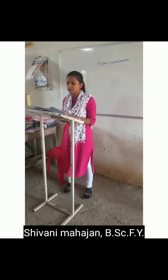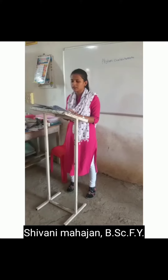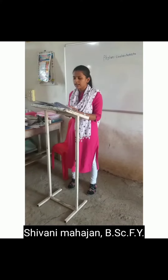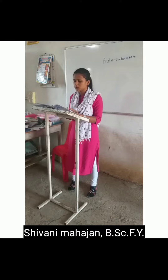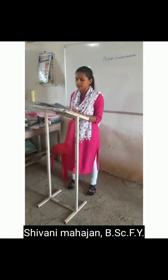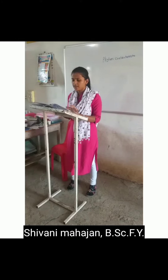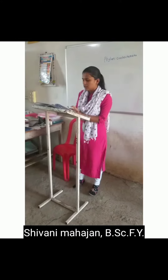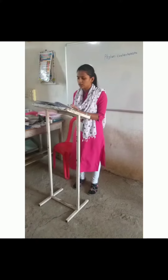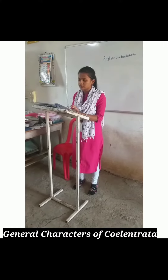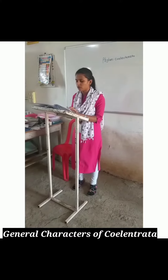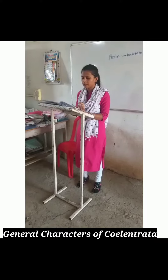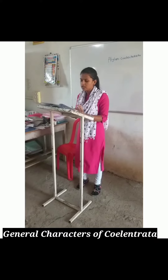First, Coelenterata are multicellular animals with tissue grade of organization. Second, they have a cavity, mostly marine, except the freshwater forms like Hydra. Third, they are radially symmetrical, either solitary or colonial.